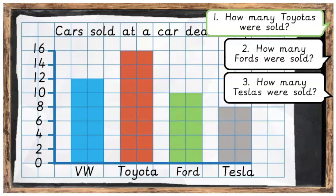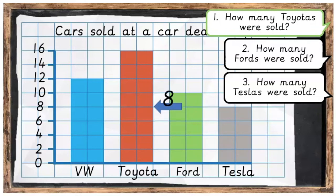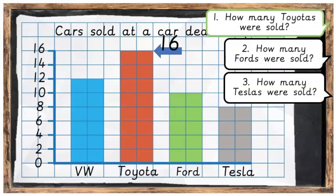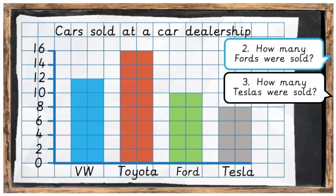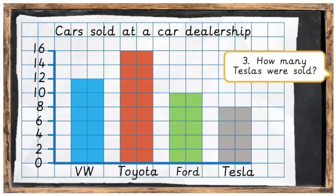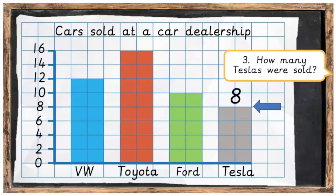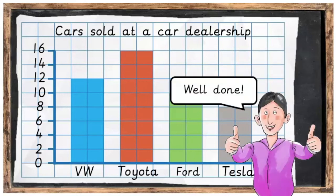How many Toyotas were sold? If we use the bar to count up in 2s we will count to 2, 4, 6, 8, 10, 12, 14, 16. There were 16 Toyotas sold altogether at the dealership. How many Fords were sold? If we do the same thing we're going to count up to 10 — there were 10 Fords sold altogether. And finally, how many Teslas were sold? If we look at the top of the bar we'll see there were 8 Teslas sold. Well done!